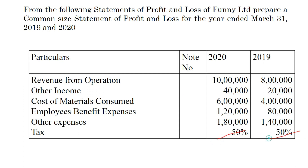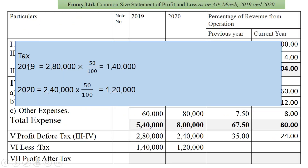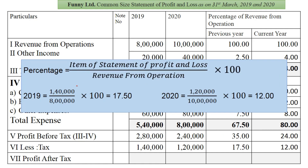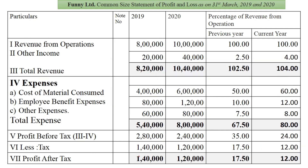The tax rate is 50%. Tax in 2019 is 1 lakh 40,000 and in 2020 is 1 lakh 20,000. As a percentage of revenue from operations, that is 17.5% and 12% respectively. Profit after tax is 1 lakh 40,000 and 1 lakh 20,000, and these percentages remain the same. I hope you are clear with the common size statement of P&L. It is a very easy chapter. When preparing the P&L common size statement, your base is always revenue from operations.